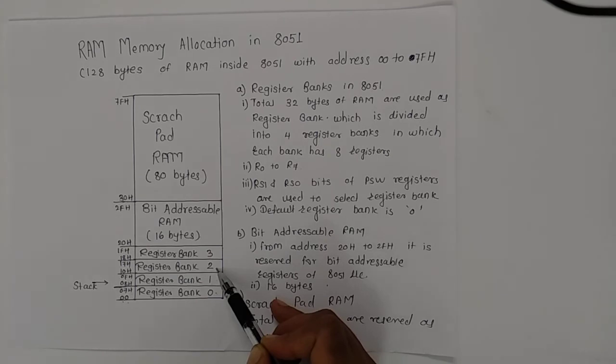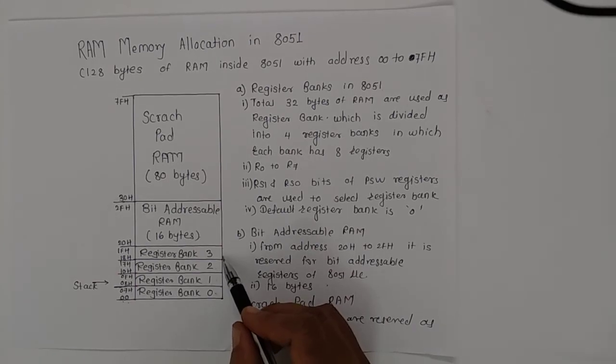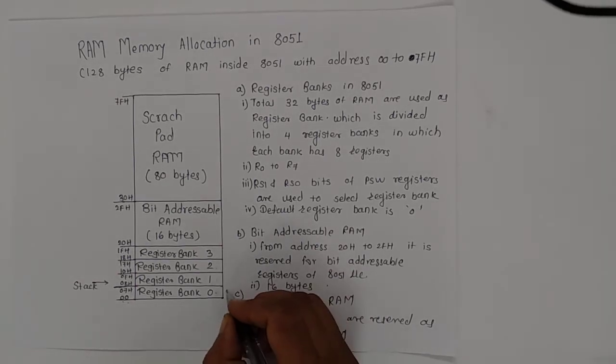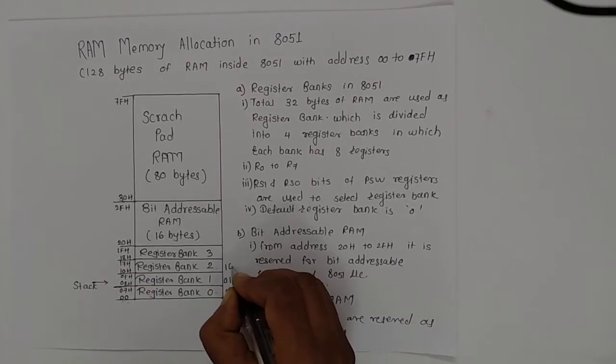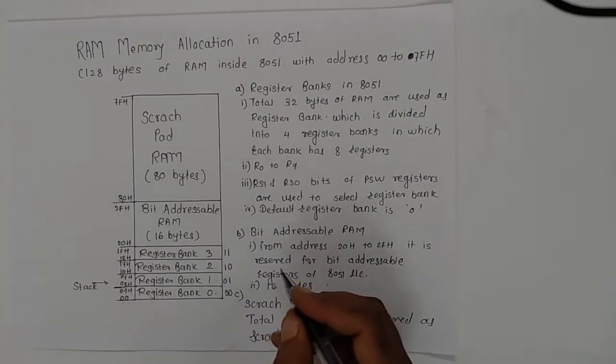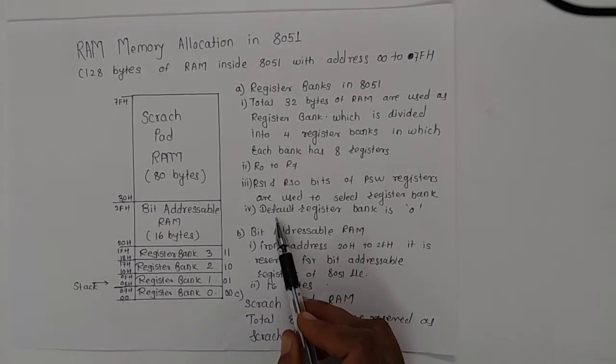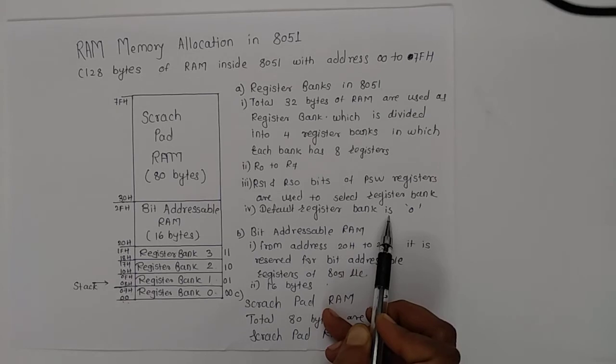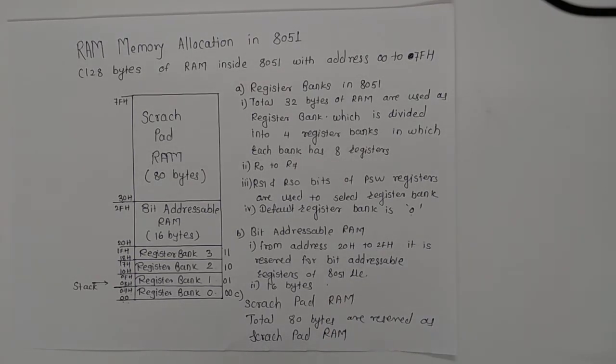When RS1 is 1 and RS0 is 0, register bank 2 is selected. When RS1 is 1 and RS0 is 1, register bank 3 is selected. The default register bank is register bank 0. This is all about register banks in 8051 microcontroller.